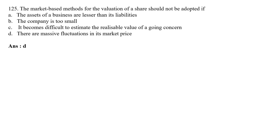The market-based method for valuation of shares should not be adopted if — Option A: the assets of the business are lesser than the liabilities; Option B: the company is too small; Option C: it becomes difficult to estimate the reasonable value of the going concern; Option D: there is a massive fluctuation in the market prices. The correct answer is Option D — the market-based method should not be adopted when there are massive fluctuations in market prices.